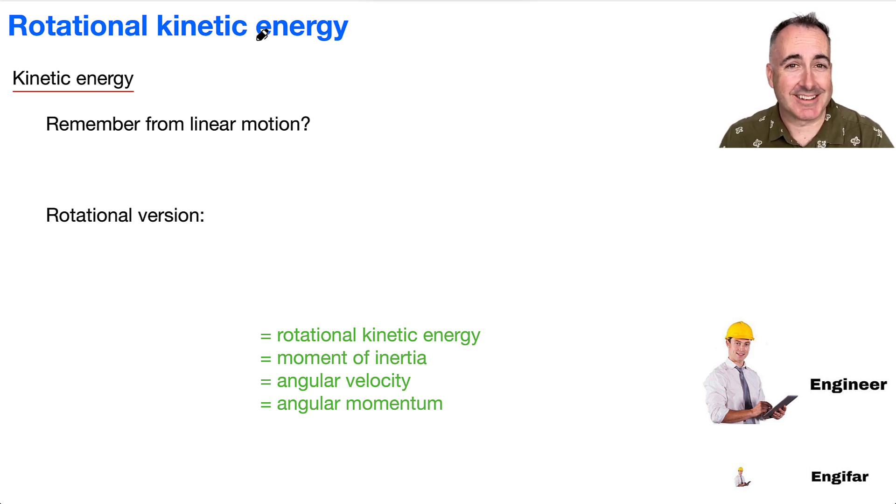Okay, so rotational kinetic energy. Let's discuss that. Remember from linear motion we have equations for your kinetic energy in a linear sense. This is from your data booklet. Kinetic energy is just half mv squared. There's another version which goes p squared over 2m. In other words, the momentum squared divided by 2 times the mass. Well, there's a rotational version as well.